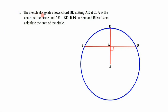The sketch shows chord BD cutting AE at C. A is the center of the circle and AC is perpendicular to BD. If EC equals 3 centimeters and BD equals 14 centimeters, calculate the area of the circle. We are required to calculate the area, and the formula is: Area = π × r².